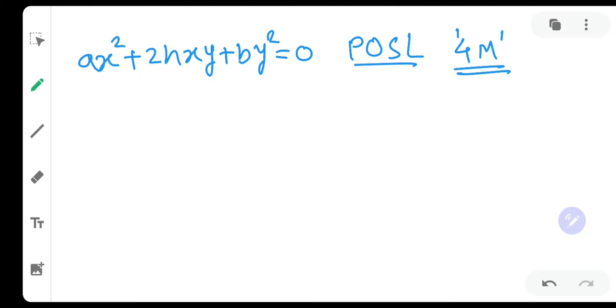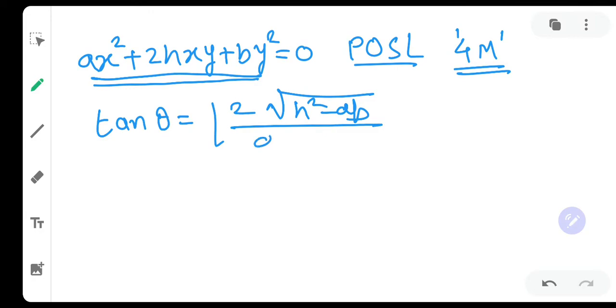This proof comes very importantly for 4 marks. Now, if you have a pair of straight lines passing through origin Ax² + 2Hxy + By² = 0, then the acute angle between this pair of straight lines is given by 2√(H² - AB)/(A + B). We need to prove this.